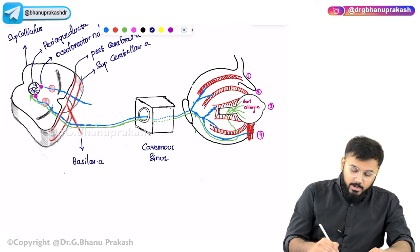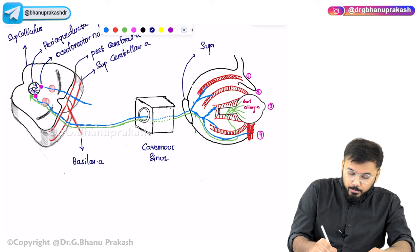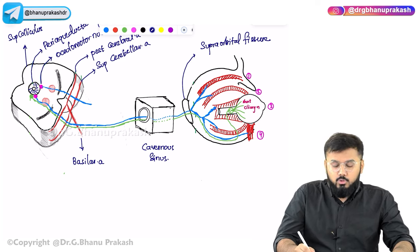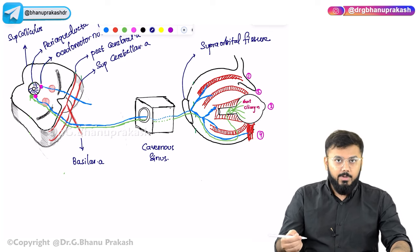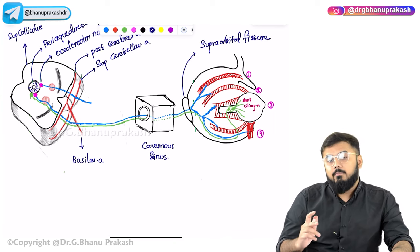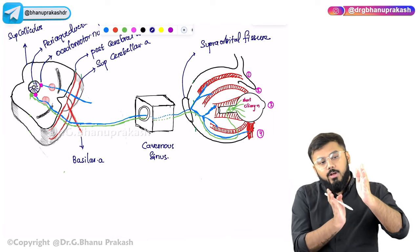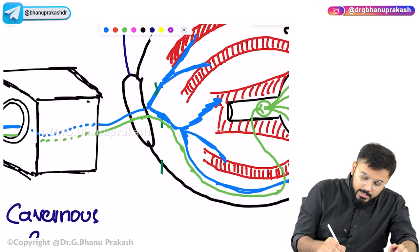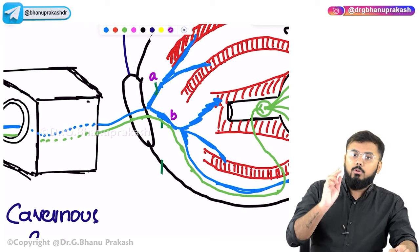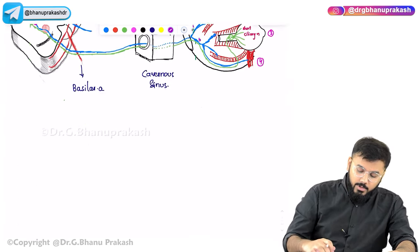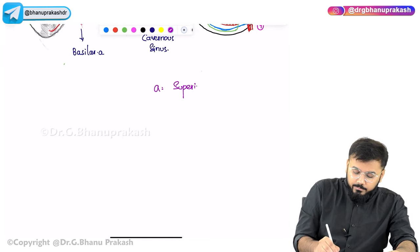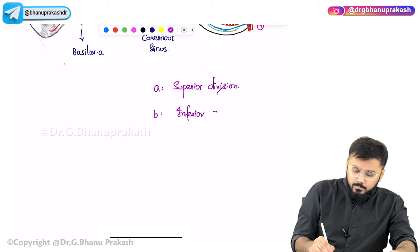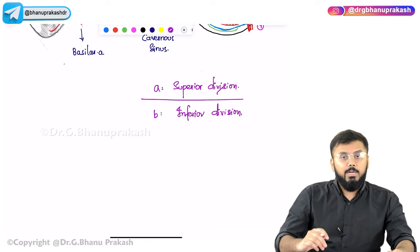The oculomotor nerve crosses the superior orbital fissure at the back of the orbit. Once it crosses this fissure, it divides into two branches: the superior division (A) going upward, and the inferior division (B) going downward.